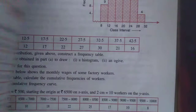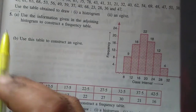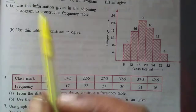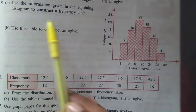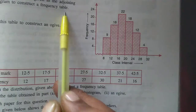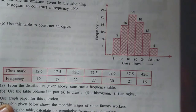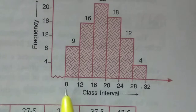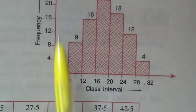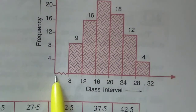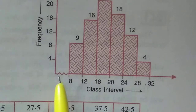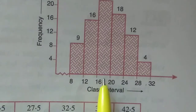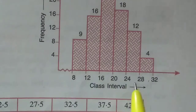Hello students, today from chapter 23 on graphical representation, we are going to continue from question number 5. In question number 5, we use the information given in the adjoining histogram to construct a frequency table. In the histogram we can see the class interval on the x-axis and frequency on the y-axis. We analyze the diagram and use this table to construct an ogive.